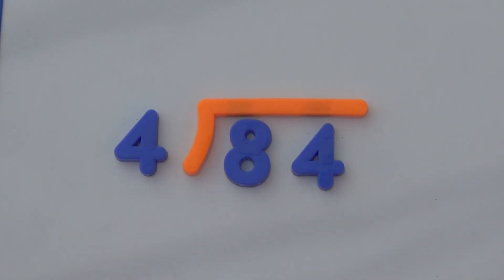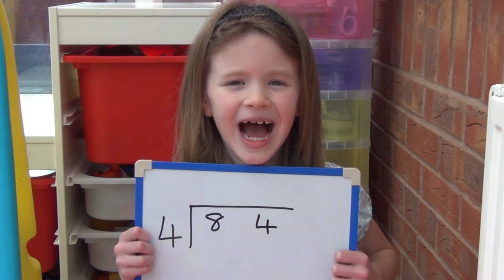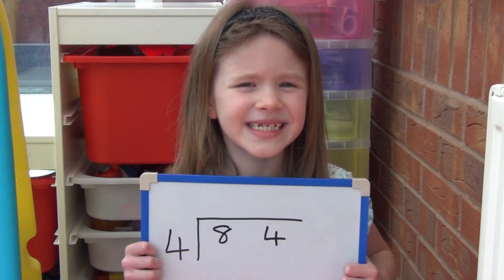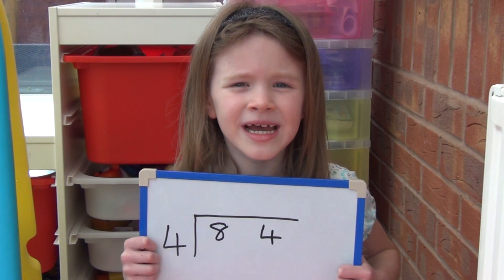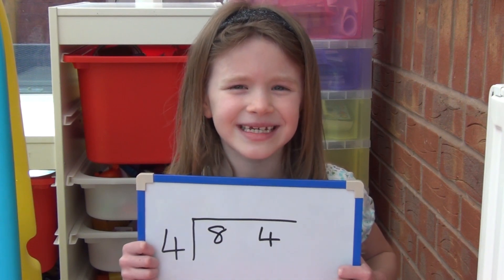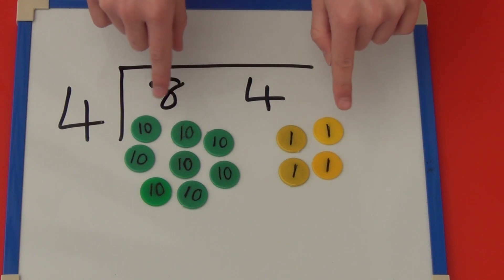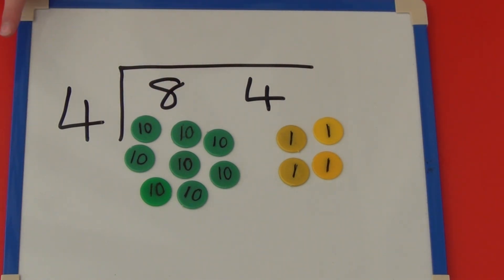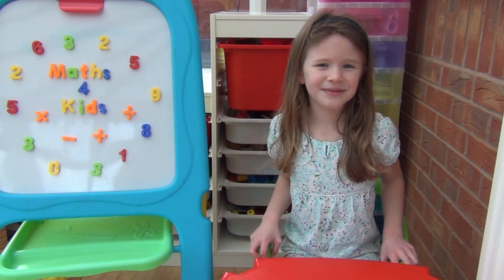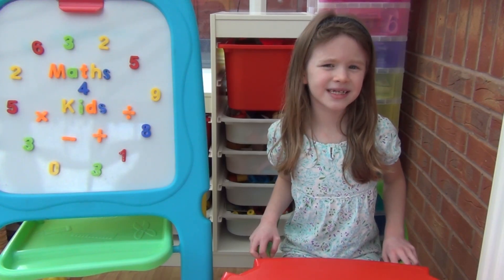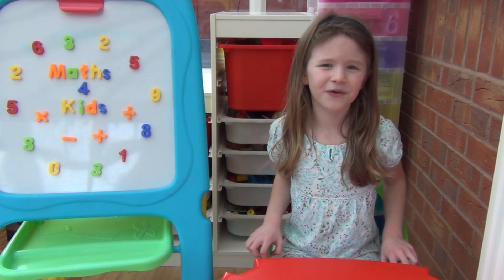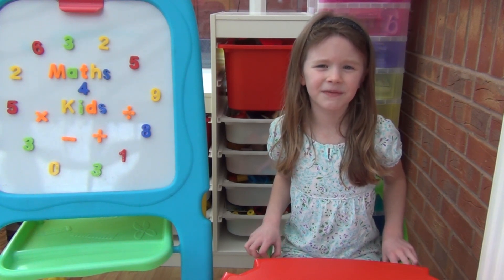First let's try 84 divided by 4. I draw my bus stop on my whiteboard and inside I'm going to make 84 using tens and ones counters. In 84 there are 8 tens and 4 ones, so I'm going to use 8 tens counters and 4 ones counters. As we're dividing by 4, I have written 4 outside the bus stop.